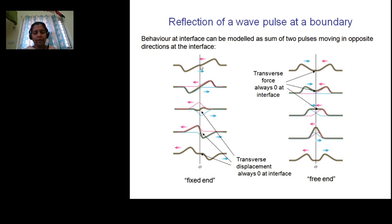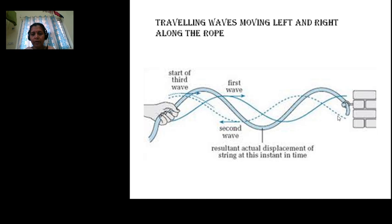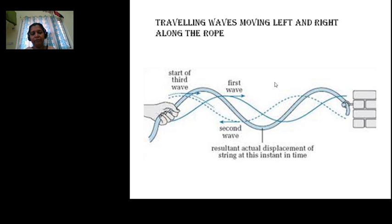In a reflected wave pulse at a rigid support, the reflected wave has an additional phase of π. At a free end, the phase change is zero. So if we have a traveling wave moving in the positive x direction and another in the negative x direction, and they overlap, we need to determine the resultant displacement of the particles of the medium.